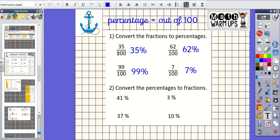So remembering our denominator needs to be 100. So this one we have got 41 out of 100, 3 out of 100, 37 out of 100, and then last one, 10 out of 100. Okay, so always keep remembering that percentage means out of 100.